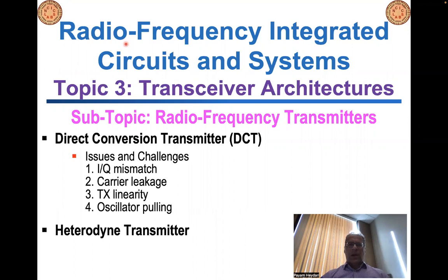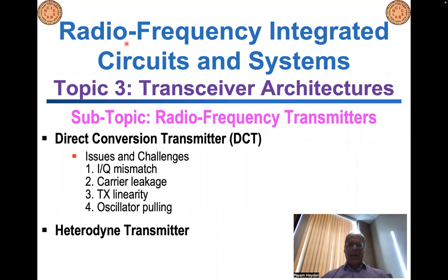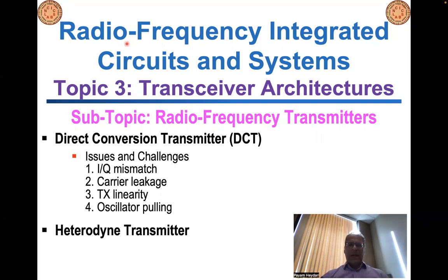So far in this course, I have covered three topics. Topic one was primarily on basic concepts in RF design. Then in topic two, I covered different types of analog and digital modulation schemes. Then I started topic three on transceiver architectures. Within topic three, I extensively looked at radio frequency receivers as a subtopic, examining different types of architectures and the challenges associated with each architecture.